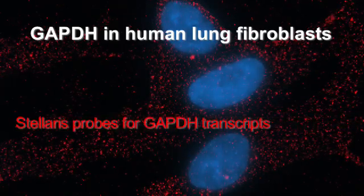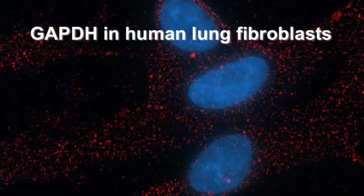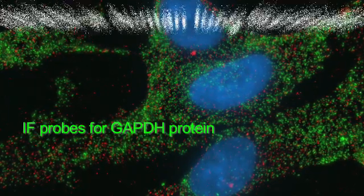Stellaris FISH can be combined with existing technologies. For example, it can be combined with immunohistochemistry, whether colorimetric or fluorescent, and with Western blotting, allowing one to look at gene regulation at both the RNA and protein level.